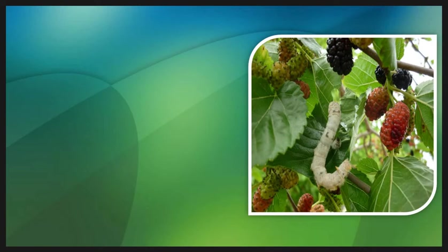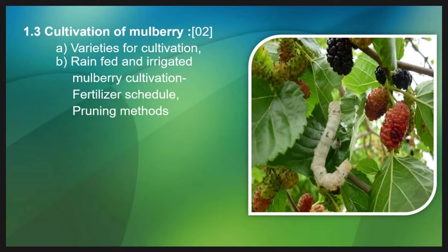Just as we need food to survive, the silkworm also needs food. If you want to rear silkworm, you have to study its food. The food of silkworm is mulberry leaves — in Marathi, known as Tuti. In Topic 1.3, we will study mori culture, which is defined as the process of cultivation of mulberry plants in order to obtain food for the silkworm. In cultivation, we will study varieties of mulberry, methods of cultivation such as rain-fed method and irrigation method, the fertilizer schedule, and pruning method — that is cutting of the mulberry tree.